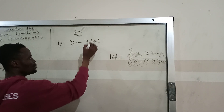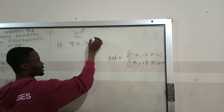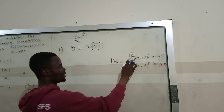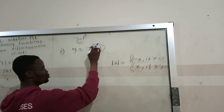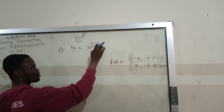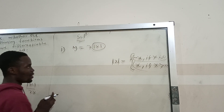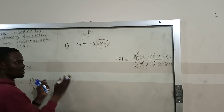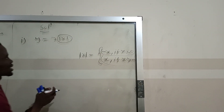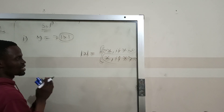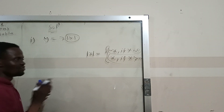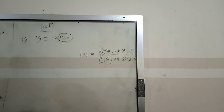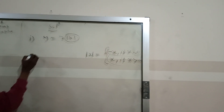What you do is, in place of the absolute value of x, if you are doing for the left hand side, you choose negative x and place it in for the absolute value of x. Then you differentiate and keep the result. Then you come back and for the right hand side, you put the positive x there and differentiate. After the differentiation, if the answers are the same, then the function is differentiable.